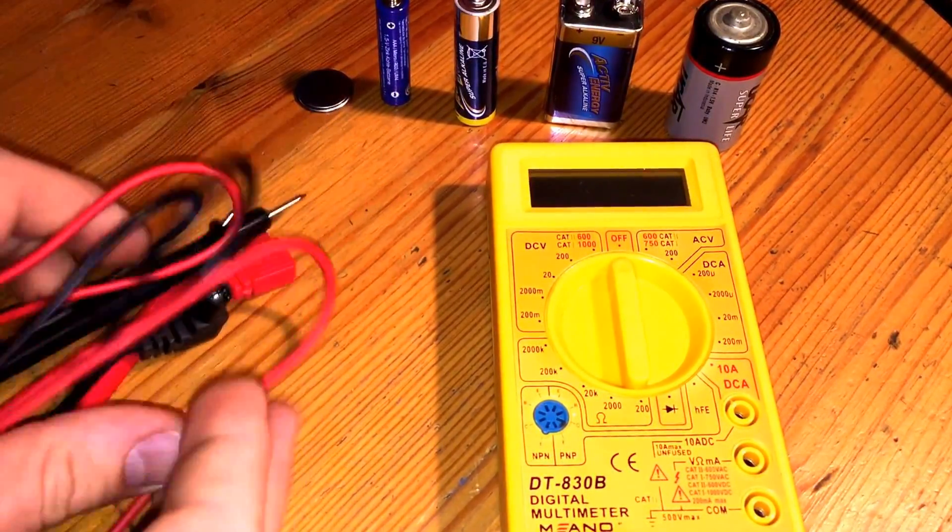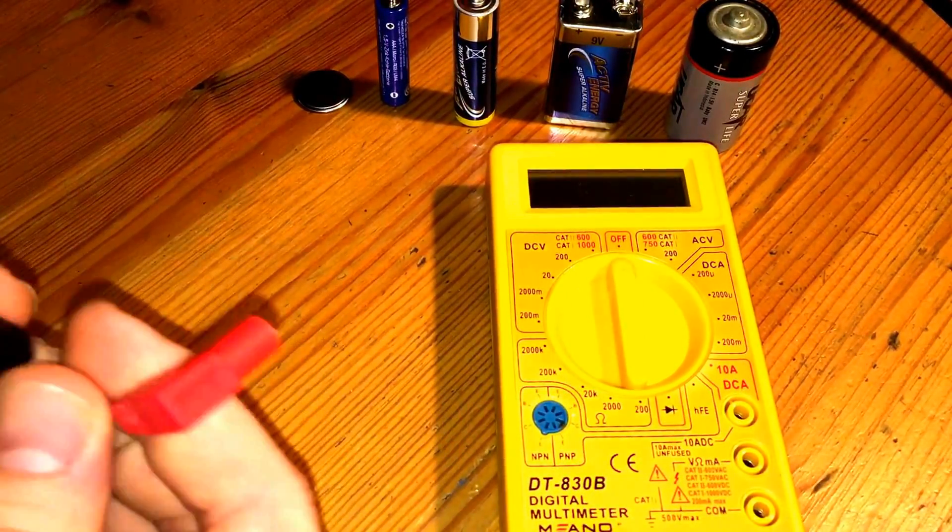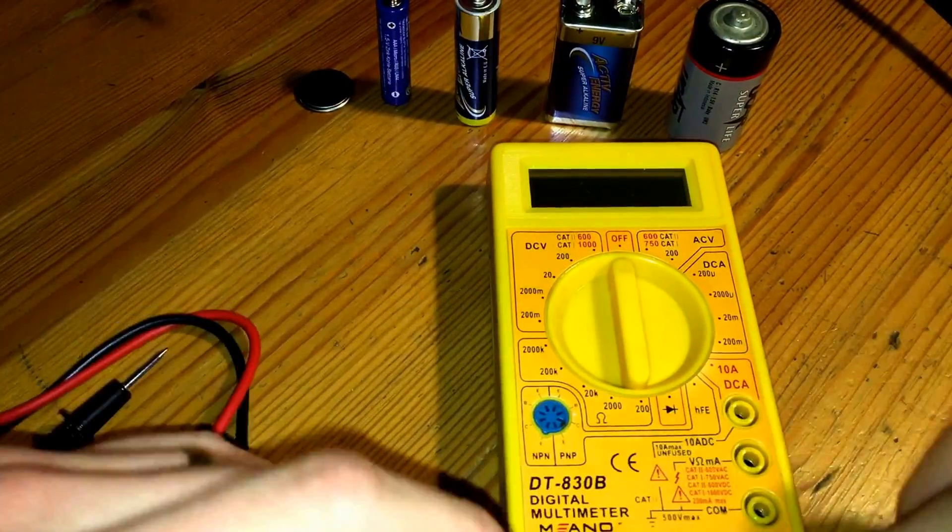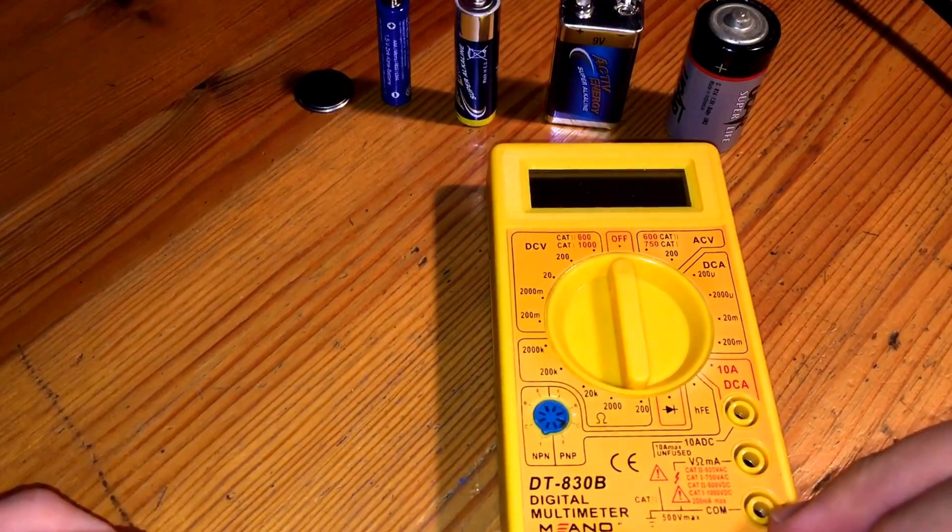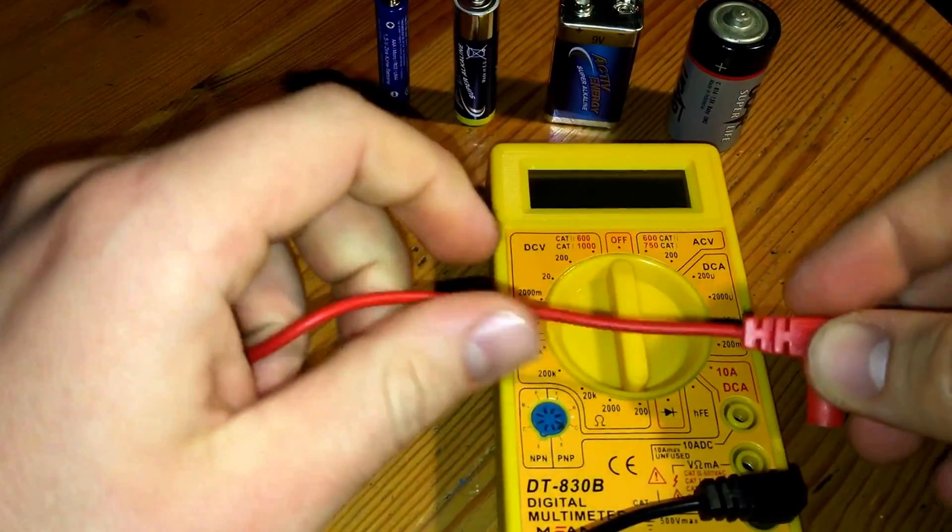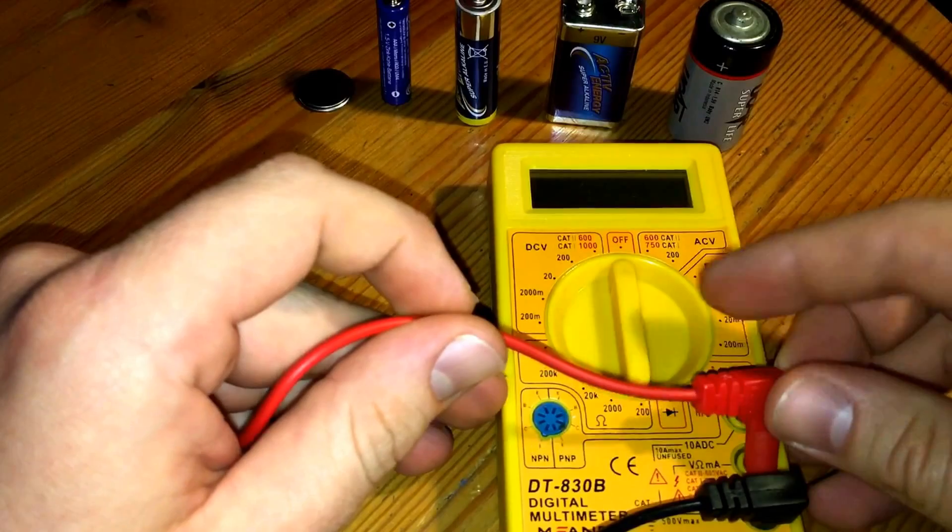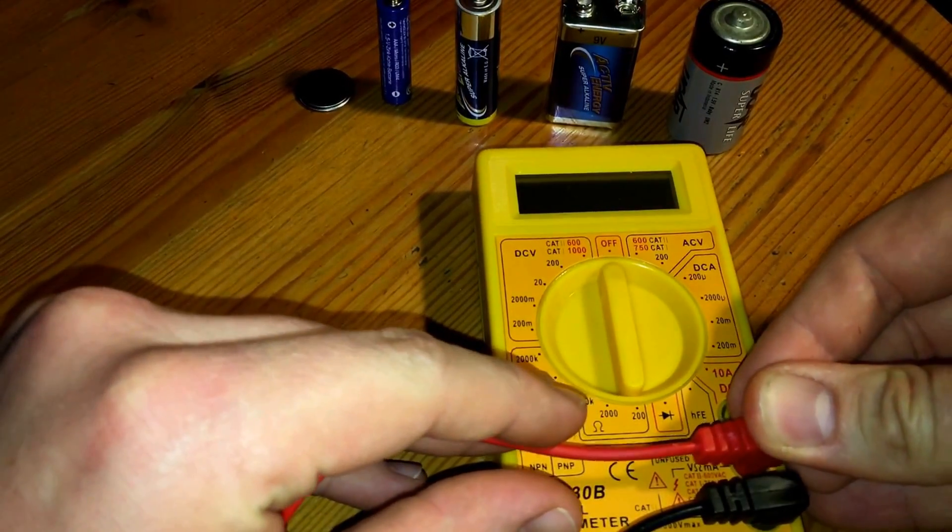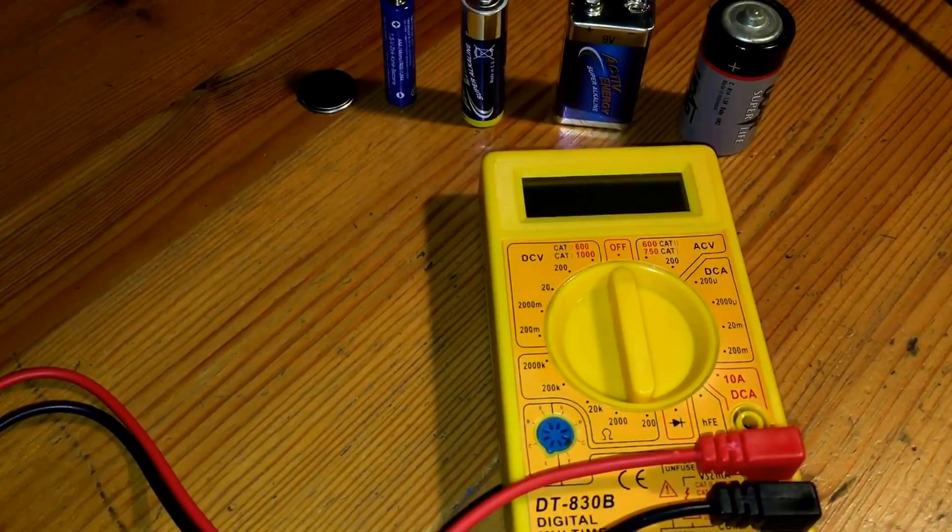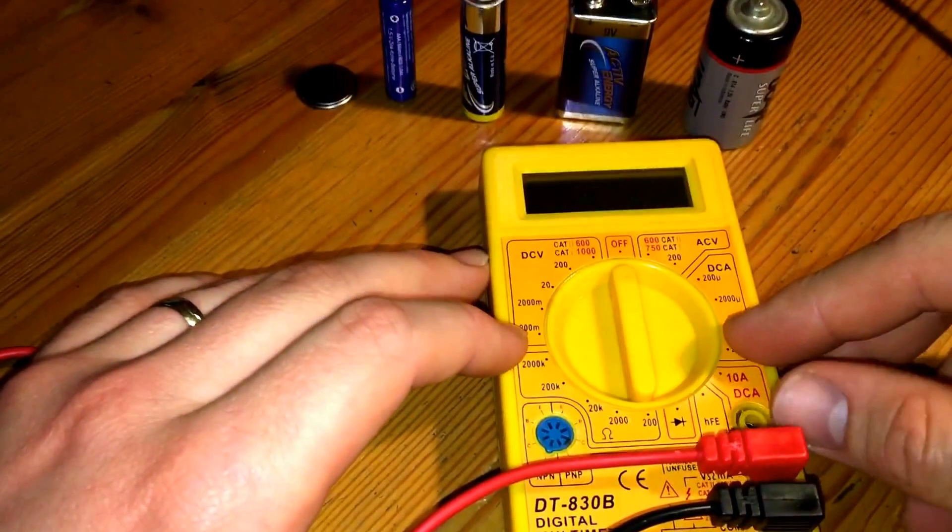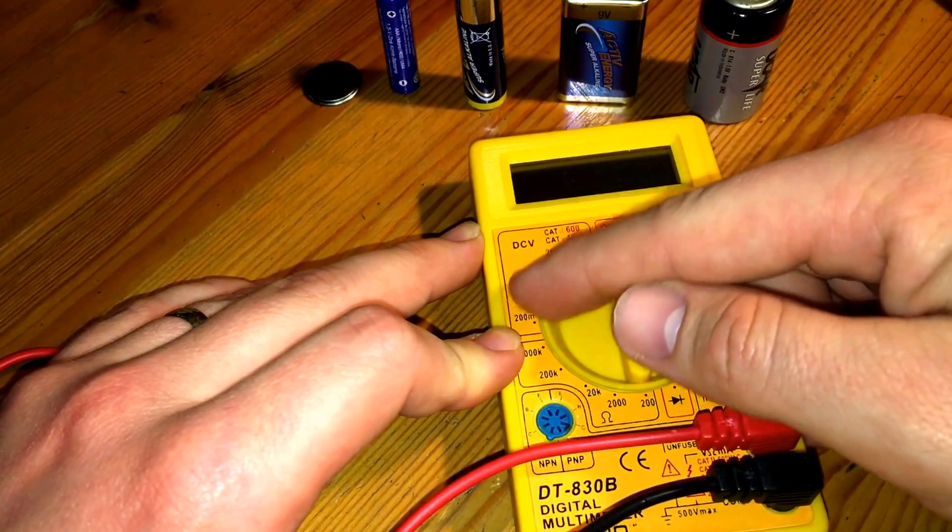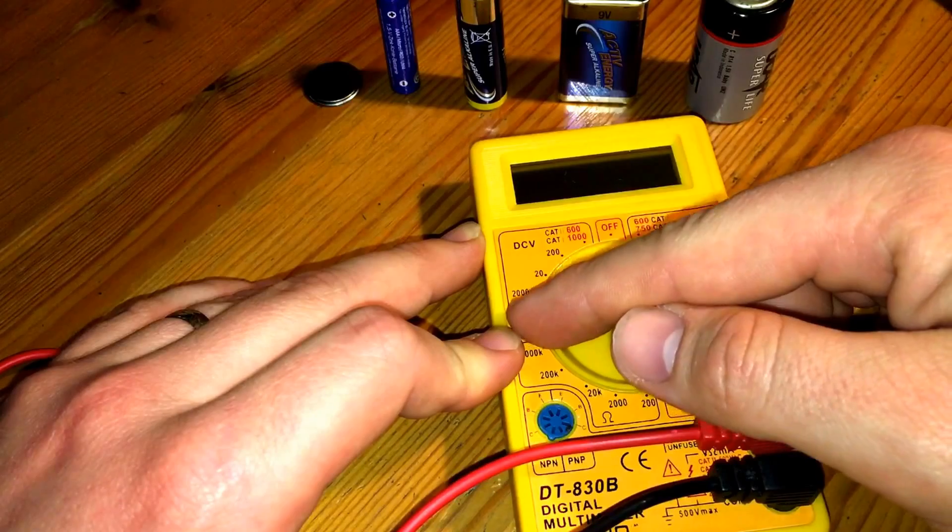There are two wires, one black or minus and one red or plus. We will take the black one and plug it into the COM port. Push the red wire in the VΩmA port. Now set the measuring range to the DCV area. This means that it is direct current.